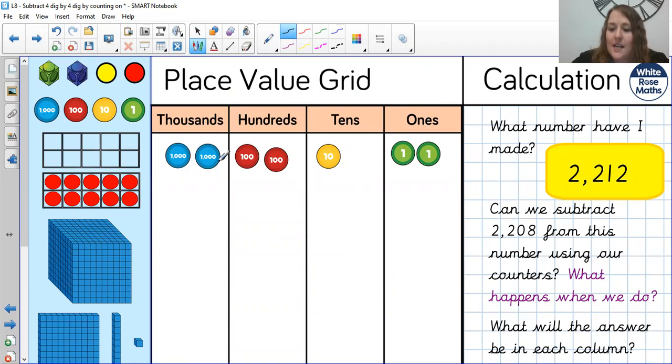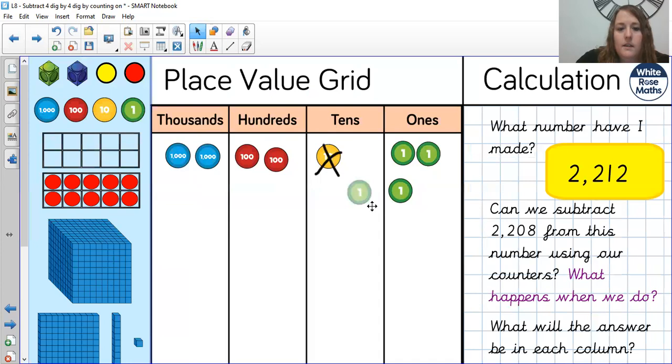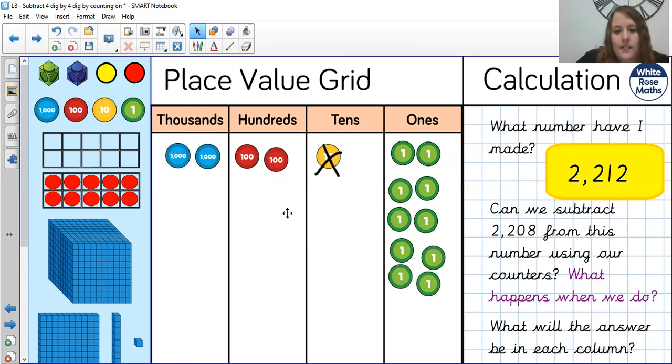Then we'd need to exchange from the tens, then the hundreds, then the thousands. So we don't have enough ones at the moment. So what I would have to do is cross out my tens and I would have to add in 10 ones. One, two, three, four, five, six, seven, eight, nine, ten.